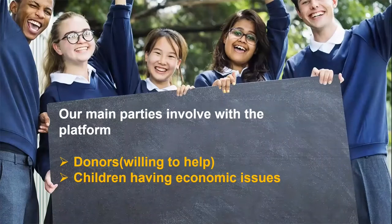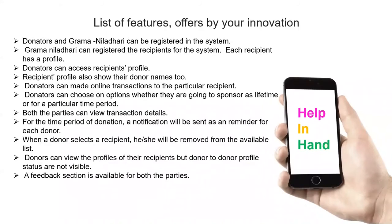The two main parties in our platform are donors and children — the beneficiaries who have economic issues. Some key features include: an admin responsible for registering beneficiaries in the system, and donors can view the recipient's profile including their personal details. Recipient profiles also show donor details, though we have not fully developed that feature yet.